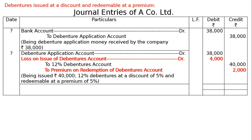Debenture application account debit Rs. 38,000 — as you know, it was credited previously. Now what is to be debited? To 12% debentures account Rs. 40,000. To premium on redemption of debentures account Rs. 2,000, that is 5% of Rs. 40,000.